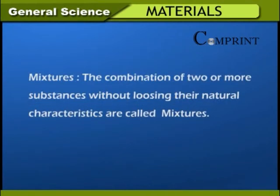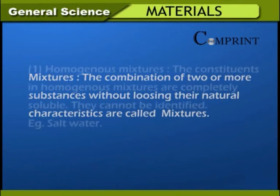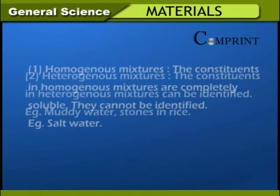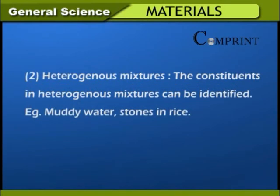Mixtures: The combination of two or more substances without losing their natural characteristics is called a mixture. Homogeneous mixtures: constituents are completely soluble and cannot be identified individually — example: salt water. Heterogeneous mixtures: constituents can be identified — examples: muddy water, stones in rice.